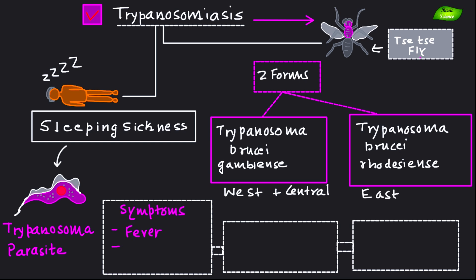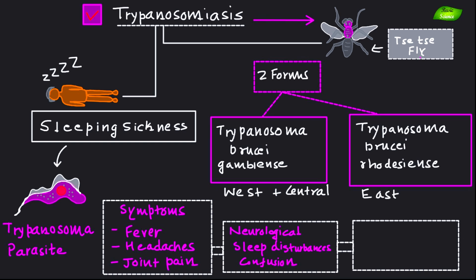Early-stage symptoms include fever, headache, and joint pain. Further progression leads to neurological symptoms including sleep disturbances and confusion — that is why this is also known as sleeping sickness. If the disease goes untreated, sleeping sickness can be fatal.